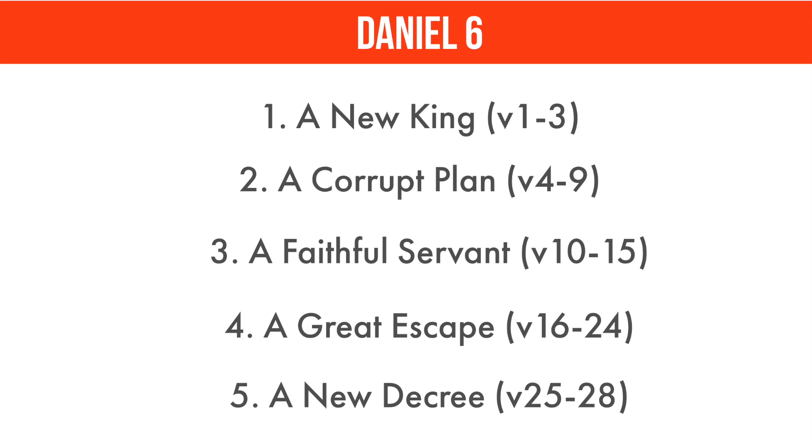So we saw a new king, a corrupt plan, a faithful servant, a great escape — but notice fifthly and finally: a new decree. King Darius is obviously delighted that Daniel has been freed. He discovers this was really a ploy made against him by these other high-ranking officials, and so he demands that all those officials who framed Daniel be fed to the lions themselves — and this time, without God's intervention, the lions eat them up and destroy them. This leads to a great song of praise from King Darius in verses 26 and 27.